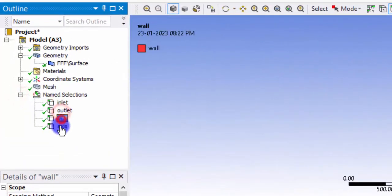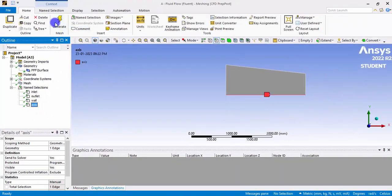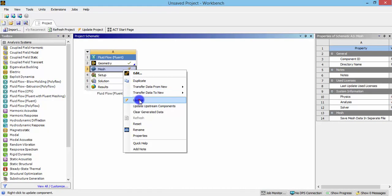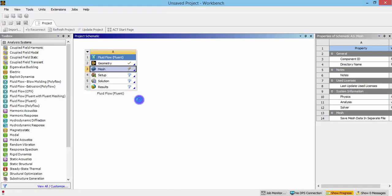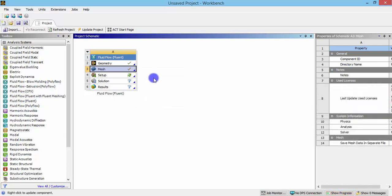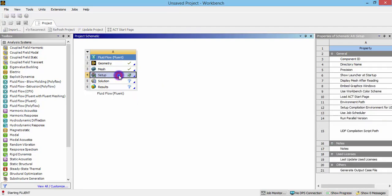Once you have created all these names, now we can simply close this and we can update the mesh so that the name selections that we have given will be updated on the mesh. Once you see the green tick in the mesh module, that means the updation has been completed.